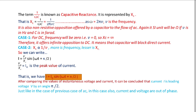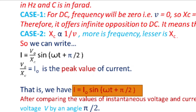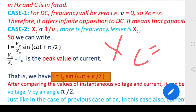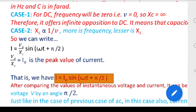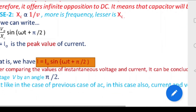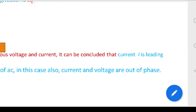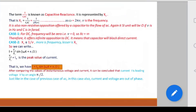Returning to the current equation: i = (V₀/Xc) sin(ωt + π/2). Here V₀/Xc is the peak value of the current. We write V₀/Xc = I₀, so the final formula is i = I₀ sin(ωt + π/2). Comparing the instantaneous voltage and current, we confirm that current is leading voltage by an angle π/2. Just as in the case of inductive reactance, current and voltage are out of phase in this case also.